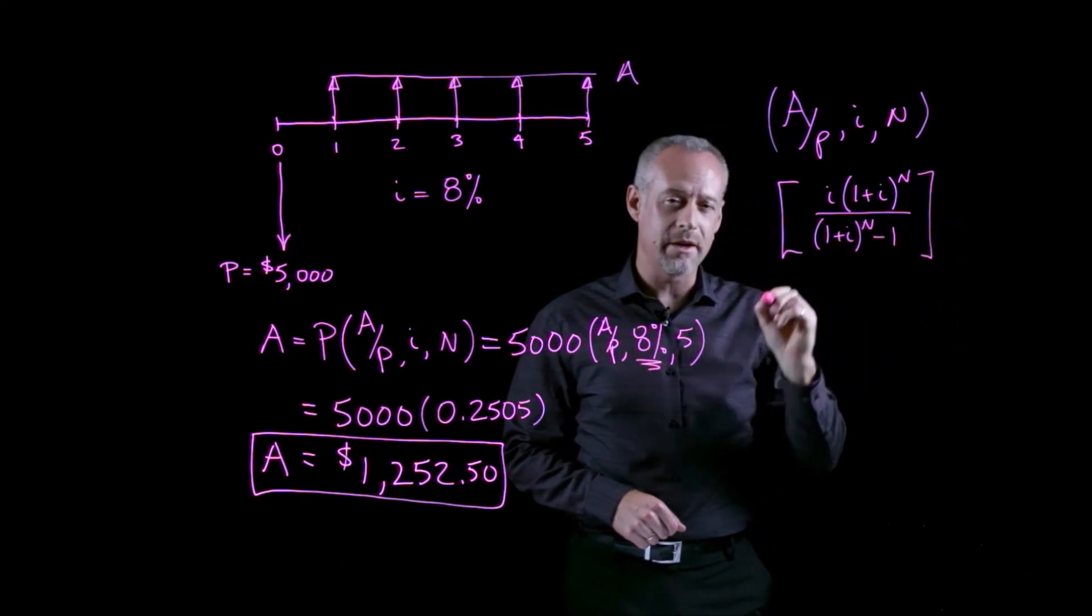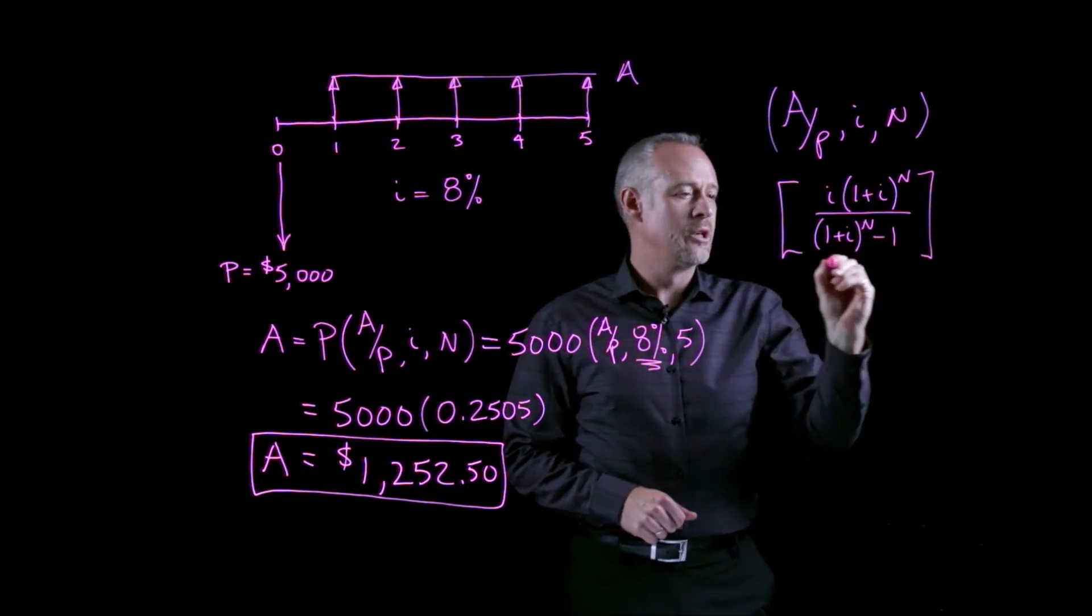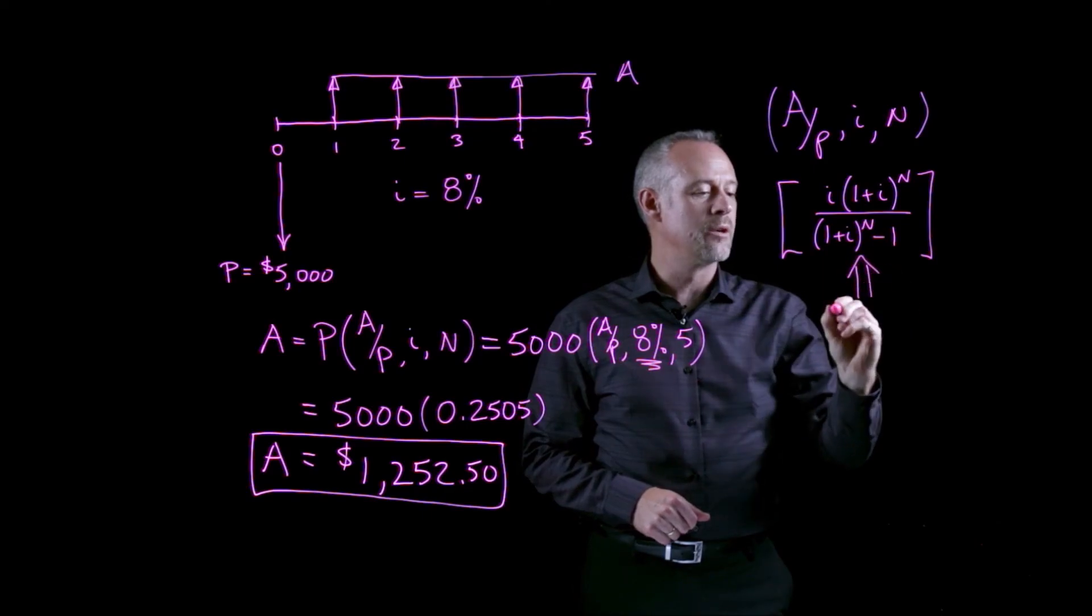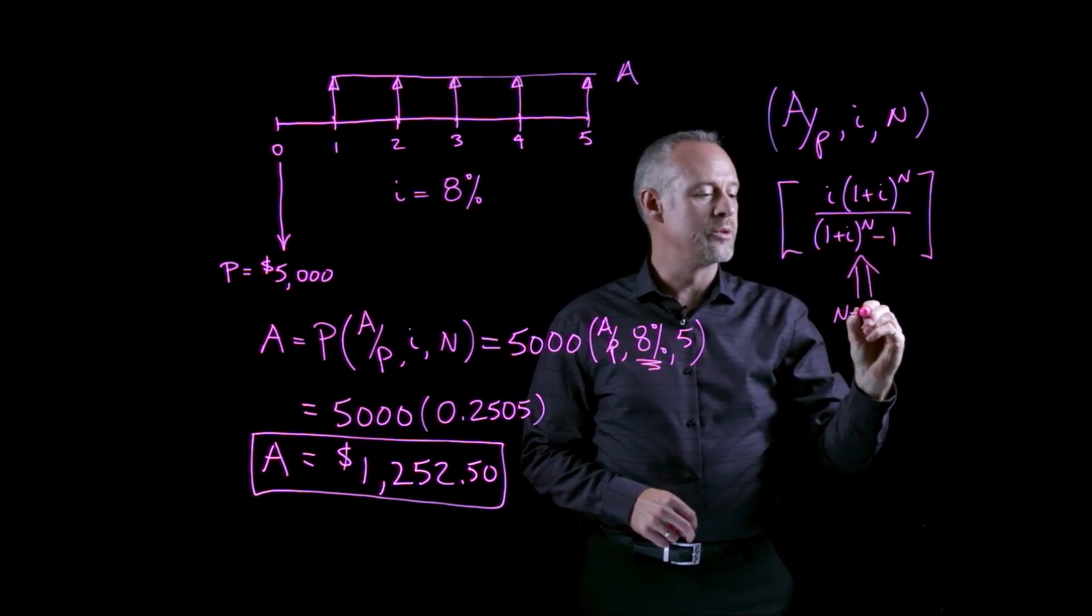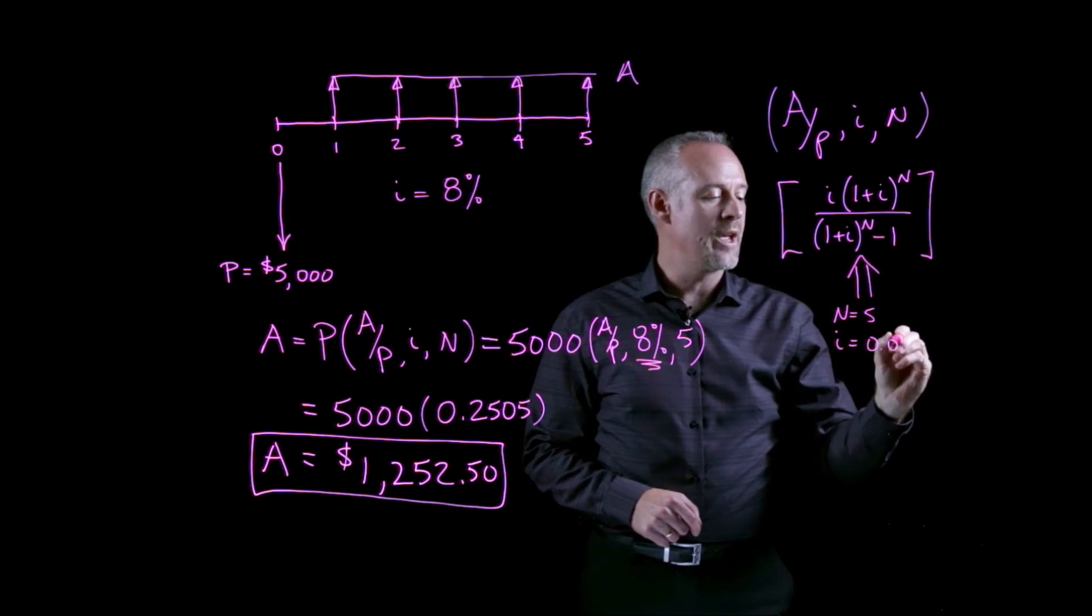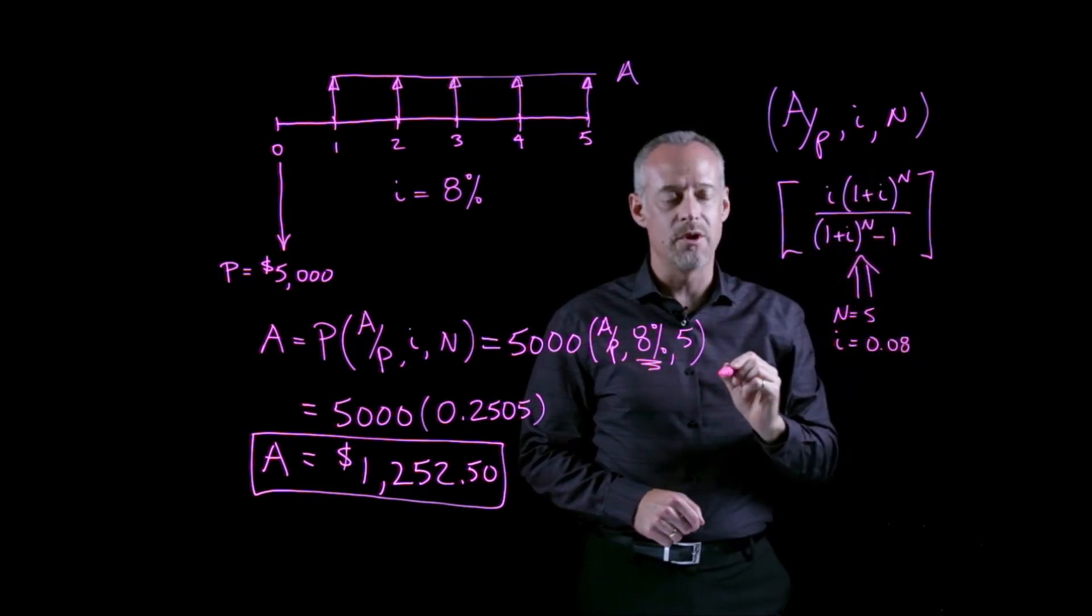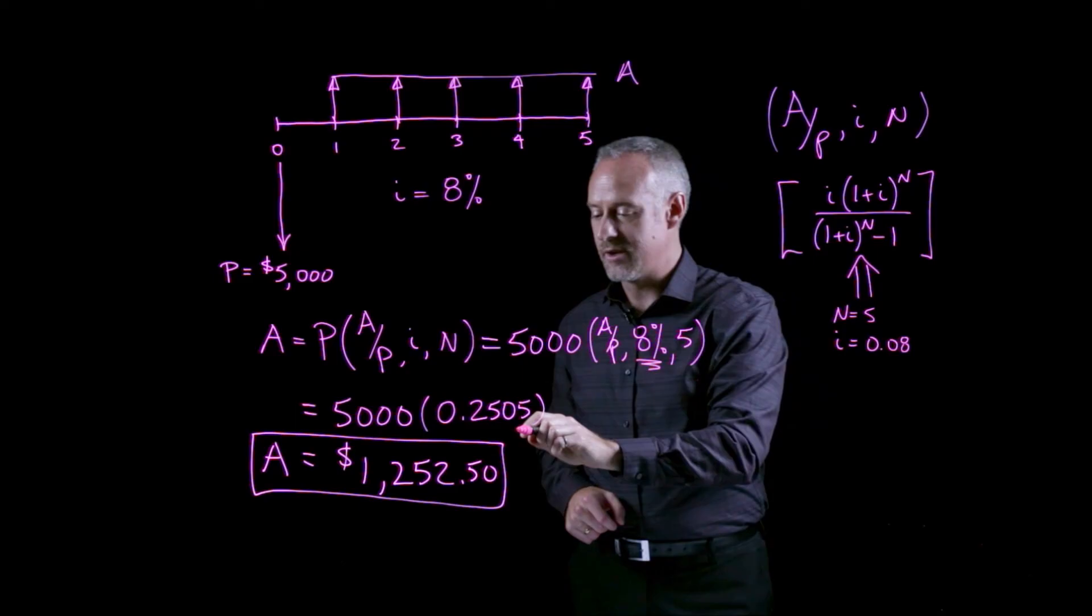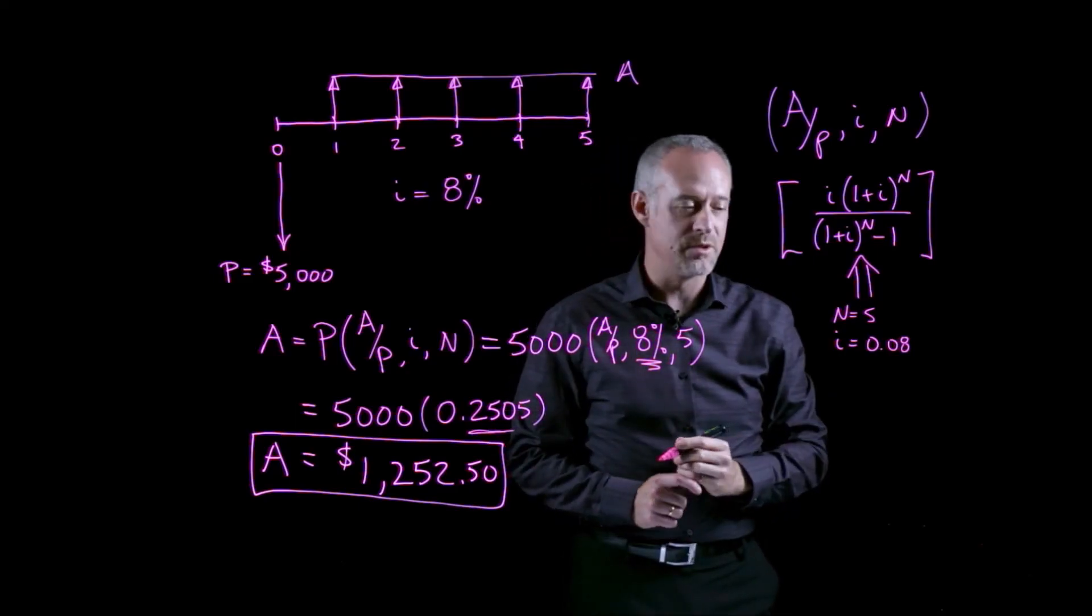And if you'd like to test yourself, try plugging in the numbers here for n equal to 5, i equal to 0.08, and just make sure that you can calculate for yourself a value of 0.2505.